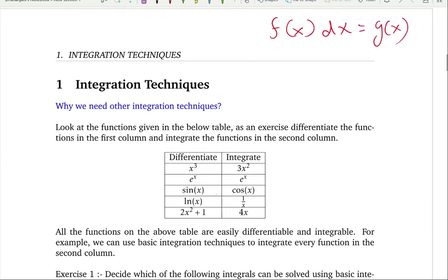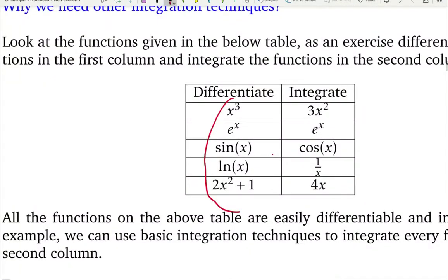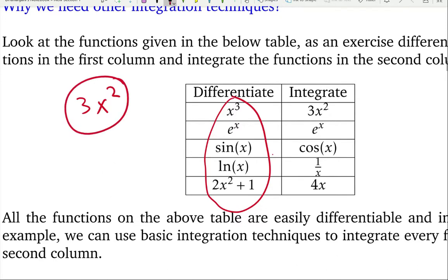Let's talk about differentiation. If you differentiate x cubed using basic differentiation rules, the 3 comes out and you get 3x squared. Derivative of e to the x is e to the x. Derivative of sine is cosine. Derivative of natural log x is 1 over x. And if you differentiate 2x squared plus 1 you get 4x.